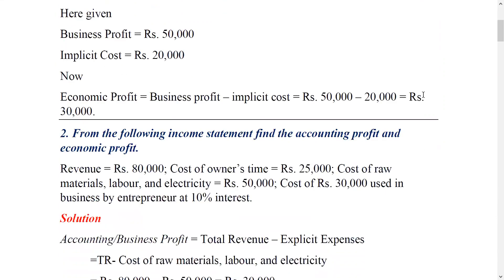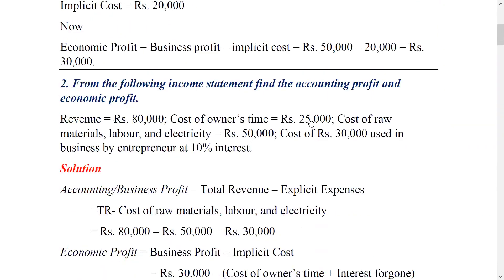The second question is: from the following income statement, find the accounting profit and economic profit. The revenue is 80,000.